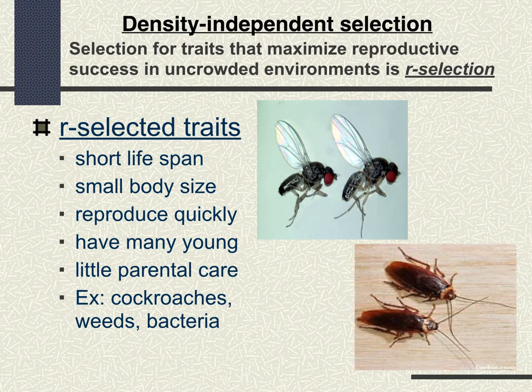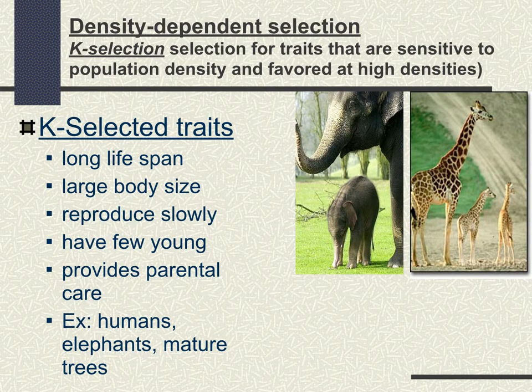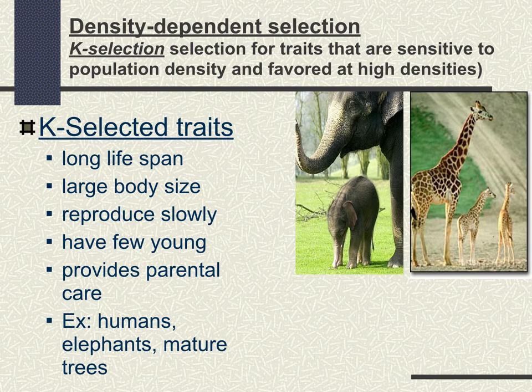Density dependent selection, or K-selection, is different. Think about the carrying capacity line — as organisms get into a crowded environment, selection for traits changes. If you're selecting for traits sensitive to population density and more favorable at higher density, you'll see things like longer lifespan, large body size, slow reproduction, fewer young, and more parental care. Humans, elephants, and mature trees adopt this type of strategy.